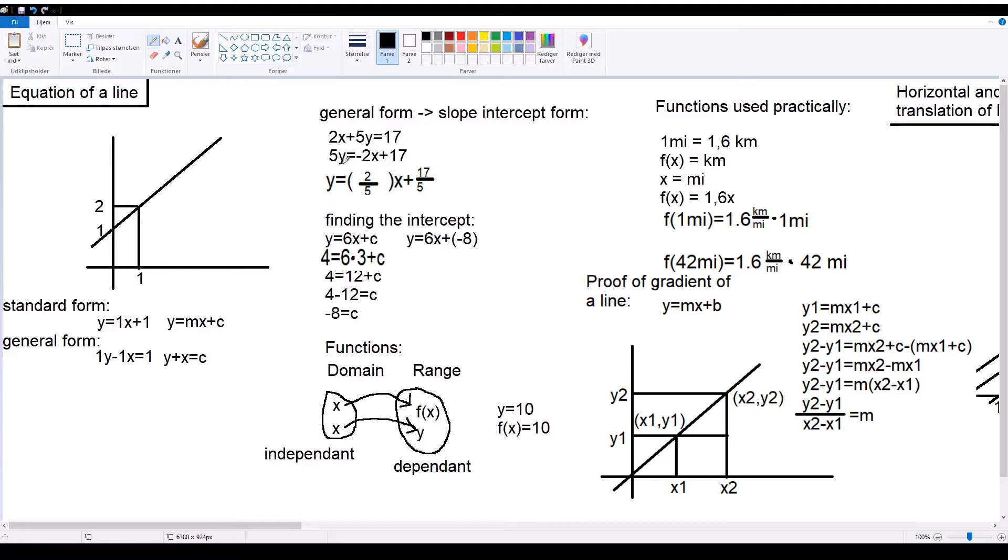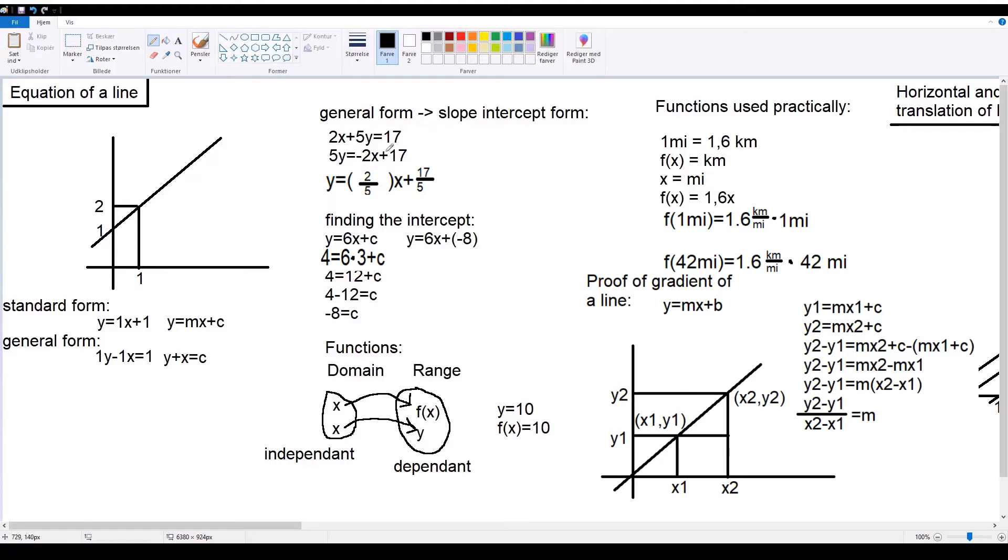Then you can isolate the y. So, you have 5y equals negative 2x plus 17. Then you just need to simplify it, so you get 1y equals negative 2 divided by 5x plus 17 divided by 5.